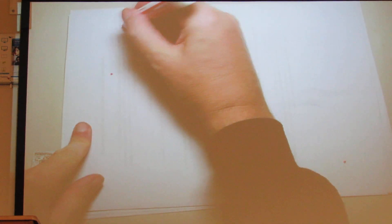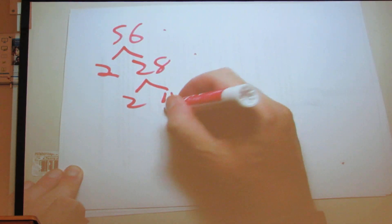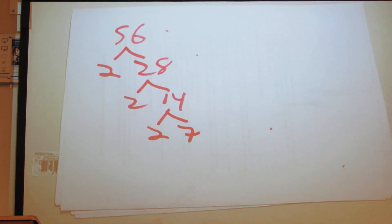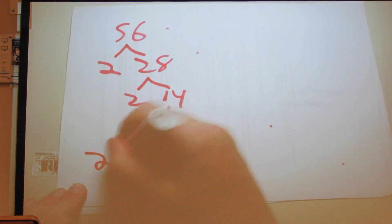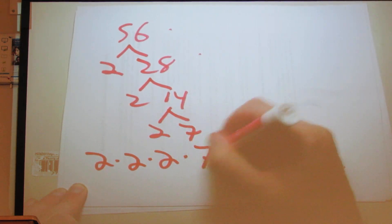Then you're going to do a prime factorization. Let's say it's 56. The easiest way to do these is to start with 2, since it's the lowest prime number. 2 will go into 56 twenty-eight times; 2 will go into 28 fourteen times; 2 will also go into 14 seven times, and 7 is a prime number. So we have 2 times 2 times 2 times 7. Make sure that you use the times symbol when you type it in and not just an x.